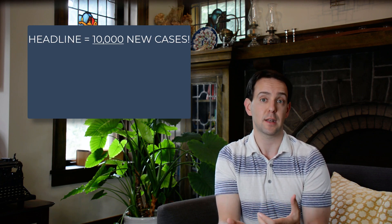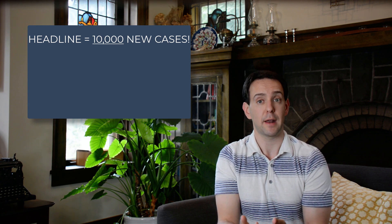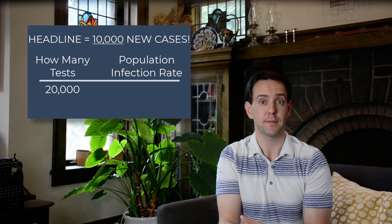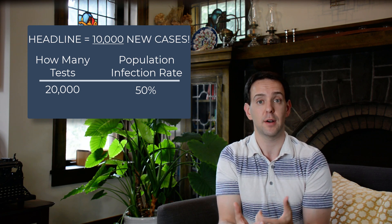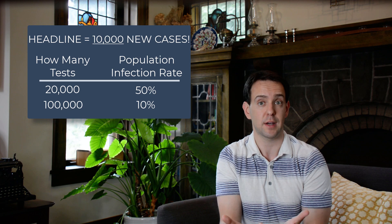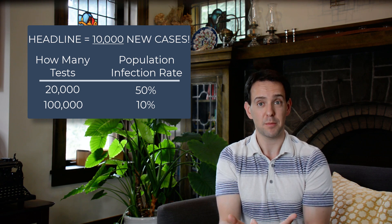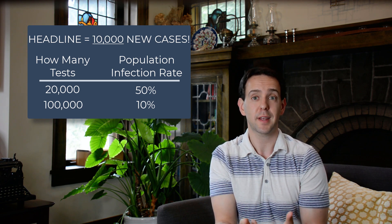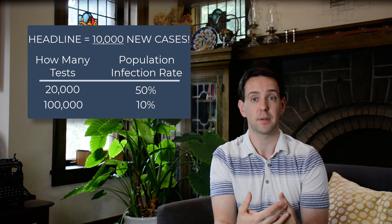So when you see headlines saying that a state reported something like 10,000 new cases in a single day, that sounds scary and terrible, but what really matters is knowing how many people were tested. If the state conducted 20,000 tests and half came back positive, that tells us there's a decent chance half of the entire state — or half a million people in our example — are actually infected. If instead they conducted 100,000 tests, that tells us only 10% of the state, or 100,000 people, are likely infected. Still not good, but a whole lot better than half a million. So again, absolute numbers are impressive to talk about, but what really matters is the percent positive.